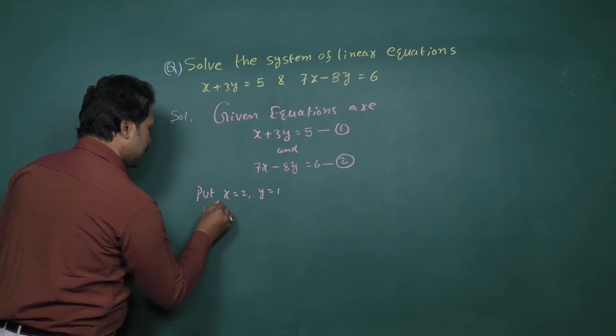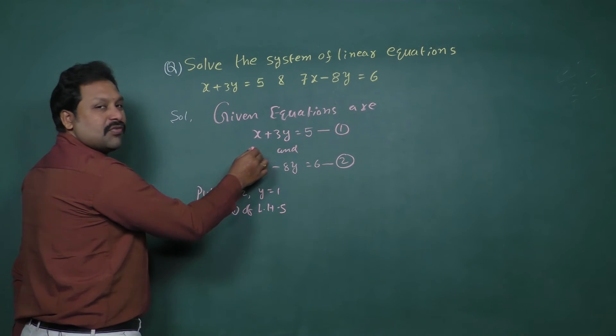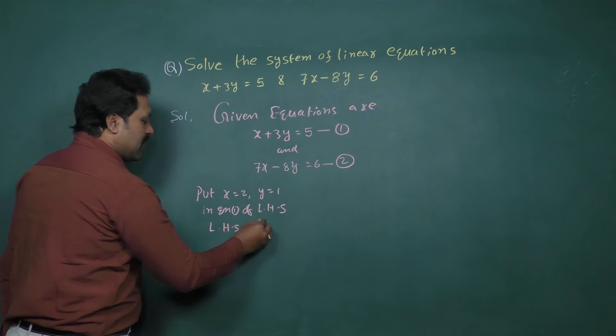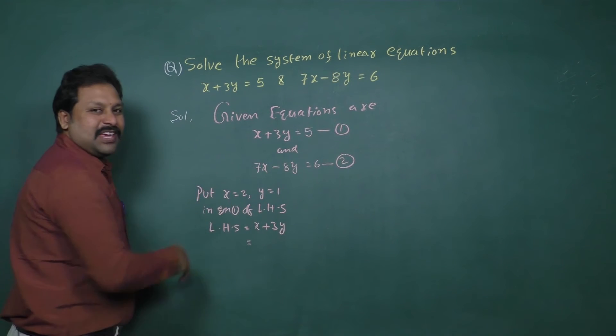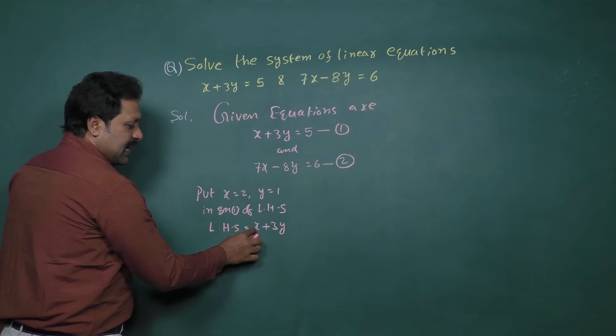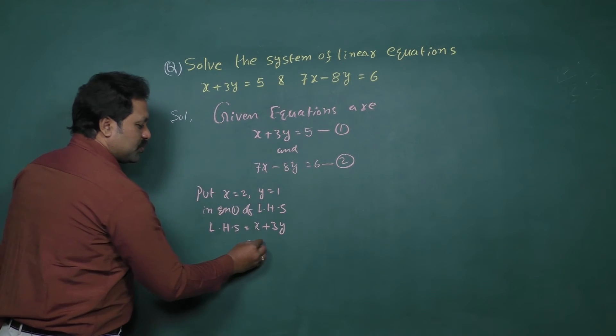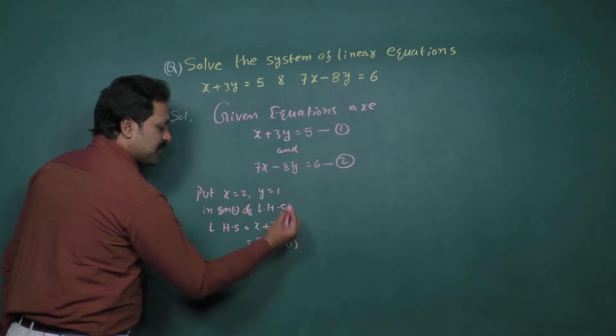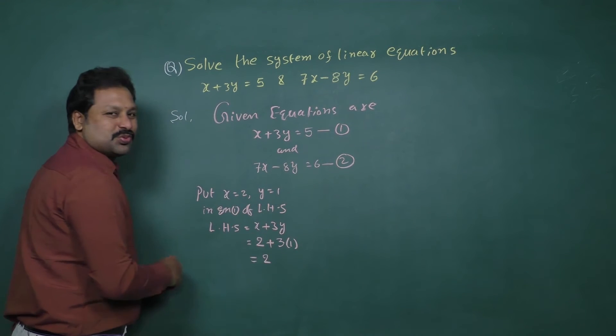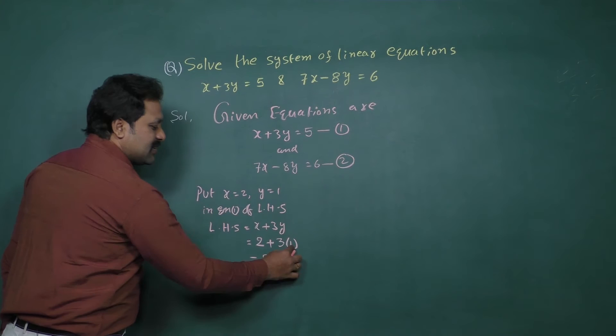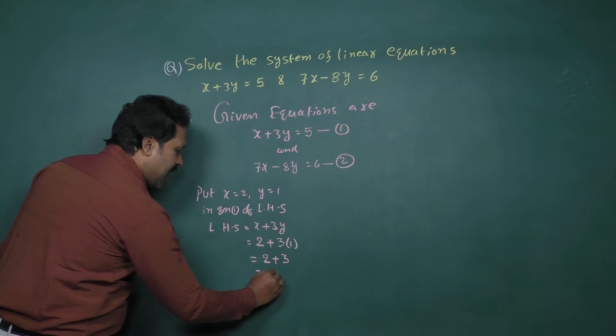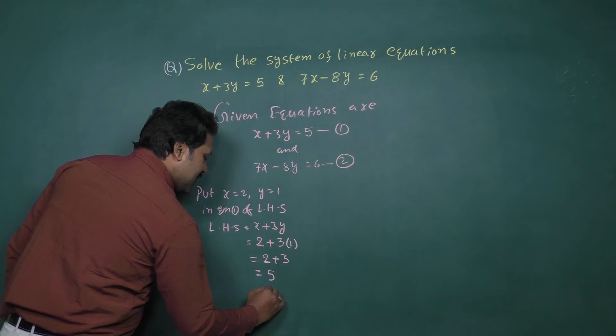So equation 1 of LHS is x plus 3y. Take x equal to 2, 3 into y value is 1, equal to 2 plus 3 ones are 3, 2 plus 3 going to be 5. This is RHS.